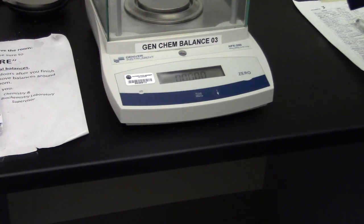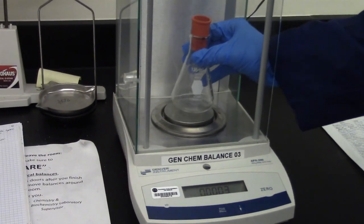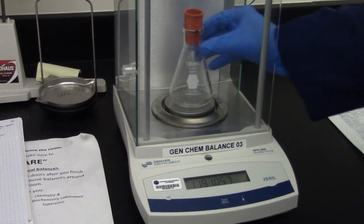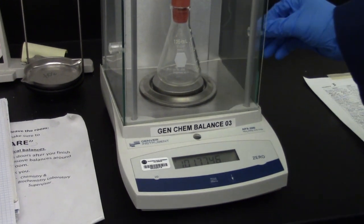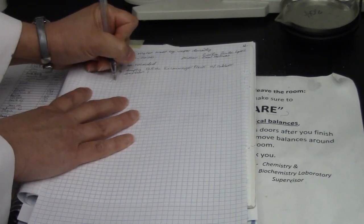Weigh a 125 milliliter Erlenmeyer flask with a rubber septum obtained from the stock room on an analytical balance. Record the mass.